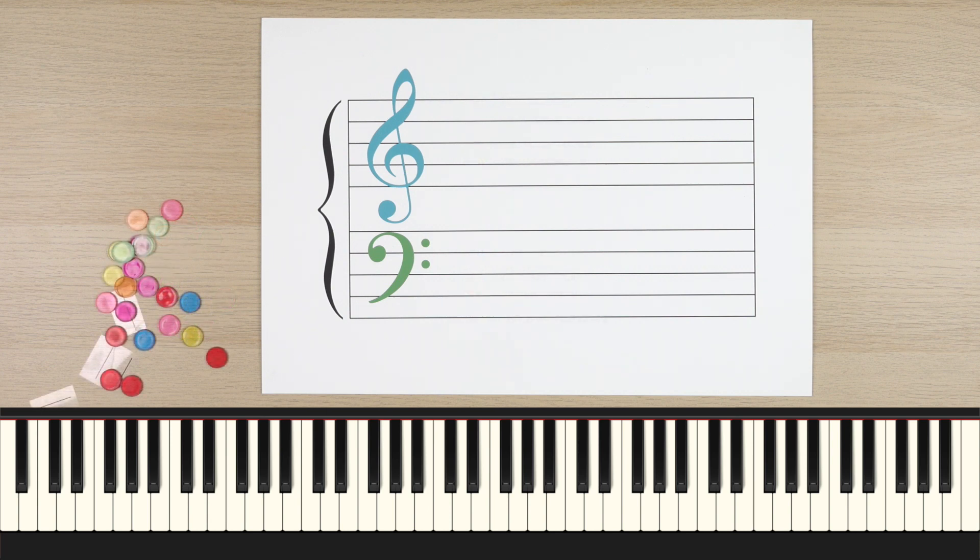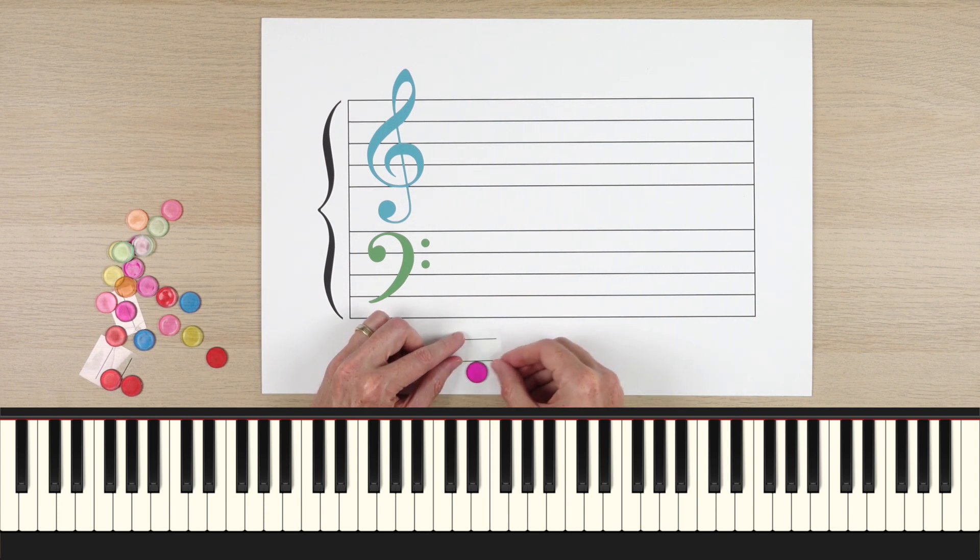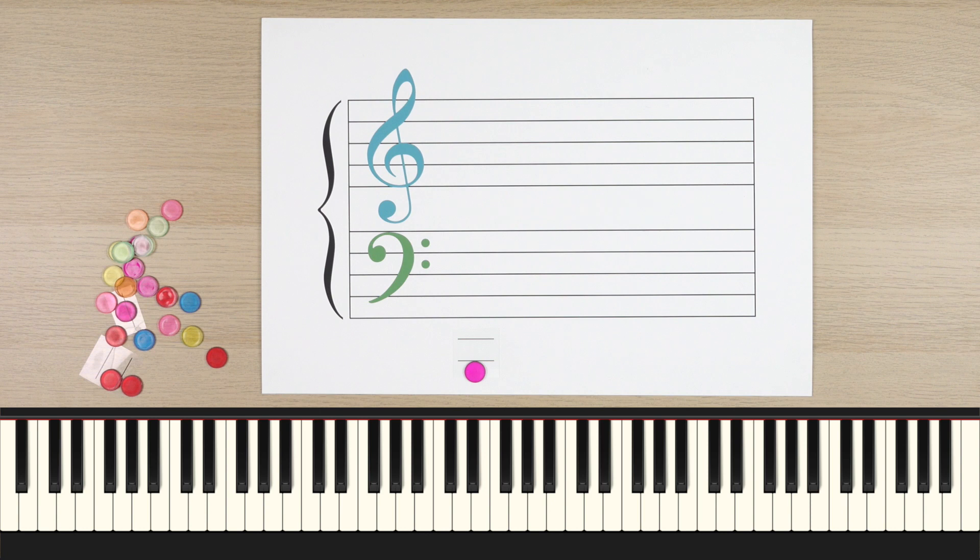The great thing about these two new guide notes is they'll make reading really high and really low notes on ledger lines a lot easier to read. For example, let's say you see this note in some music. Well, you know that this line here is low C. A step below C is B. So that would be low B here on your piano.